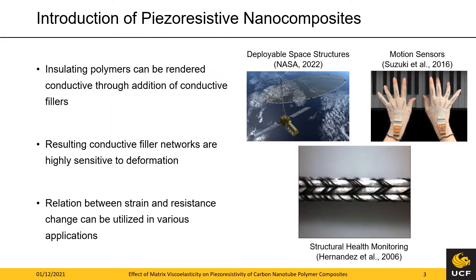Let me start with a brief introduction into piezoresistive nanocomposites. This class of materials combines electrically insulating materials such as polymers or ceramics with highly conductive filler materials, as for instance carbon nanotubes, graphene platelets, or carbon black, to form a conducting microstructure. The conductivity of the microstructure is highly sensitive to deformations and thus can be utilized in strain sensing.